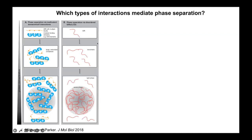Some intrinsically disordered regions can phase separate as well. As a quick reminder, intrinsically disordered regions are proteins that do not adopt a unique folded structure, but rather interconvert between different unfolded conformations. These can be extended or compact, can contain some secondary structure or tertiary context. These conformational properties are encoded in their sequence, as is their phase behavior. We're interested in understanding how phase behavior — whether an IDR can phase separate or not — is encoded in their sequences.